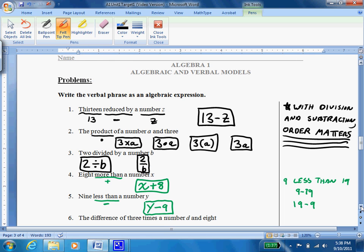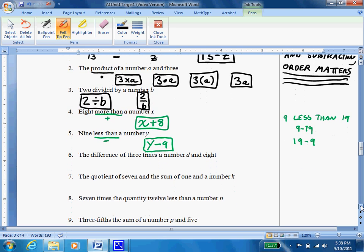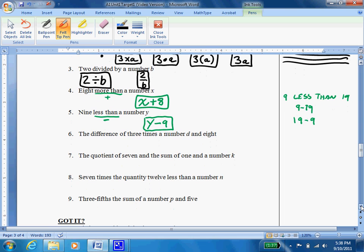Okay, let's do some that have multiple operations in them. So number 6, we're going to do the difference of 3 times a number d and 8. So difference tells me subtraction and times tells me multiplication. So I know it will be 3d minus 8.